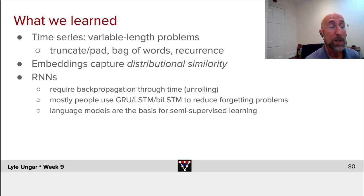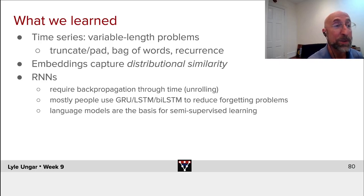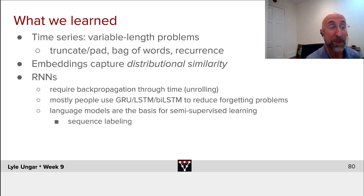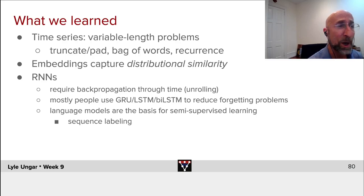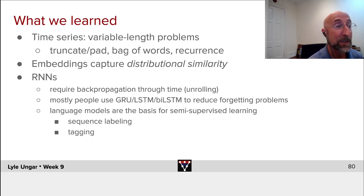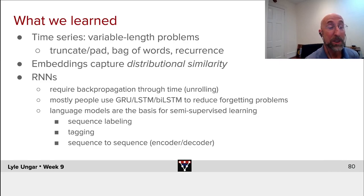We saw that language models predict the next word given the preceding words, and are the basis for lots of networks because you can train given lots of unsupervised data. Given that, you can then label sequences — is this post friendly or hostile? Is this a purchase offer or not? One can tag the words: is this a person, a place, a movie, a book?